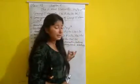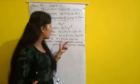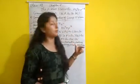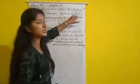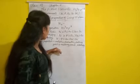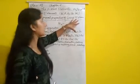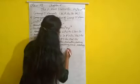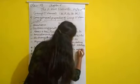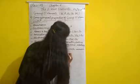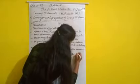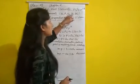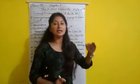Moving to boiling and melting points: boiling point increases on going down the group, from nitrogen to bismuth. For melting point, it increases from nitrogen to arsenic, then gradually decreases from arsenic to bismuth.